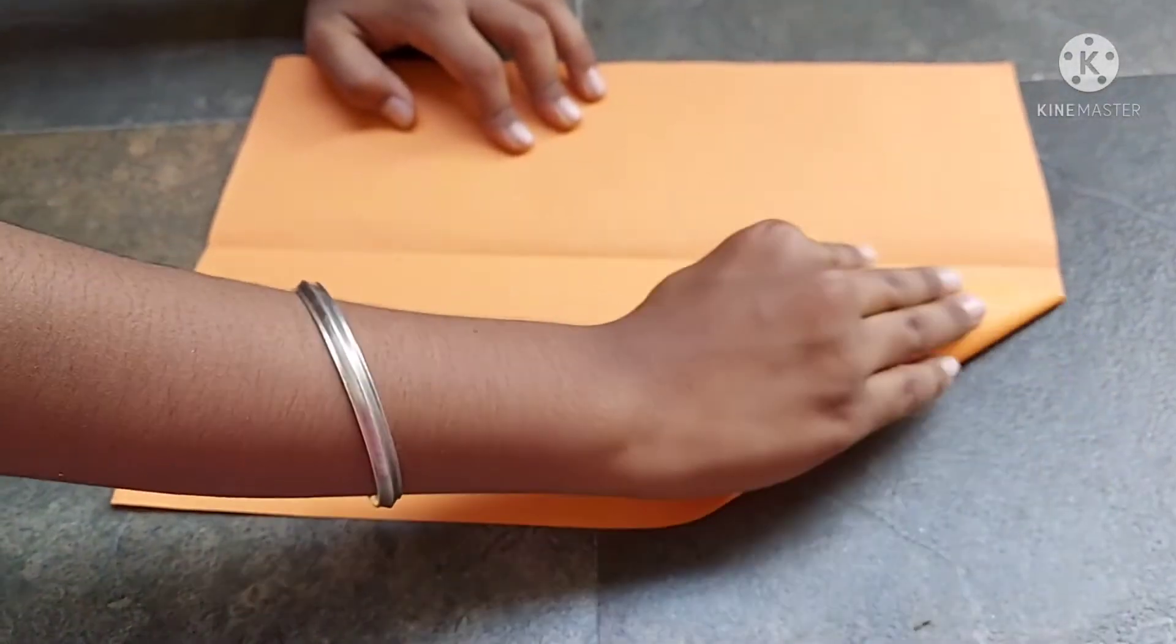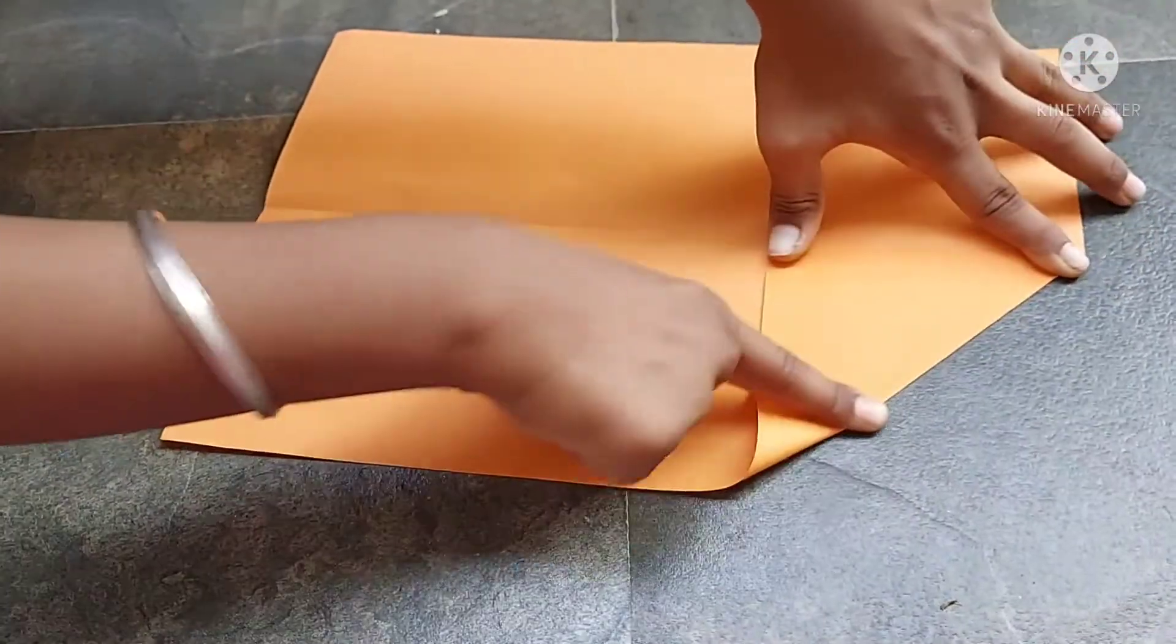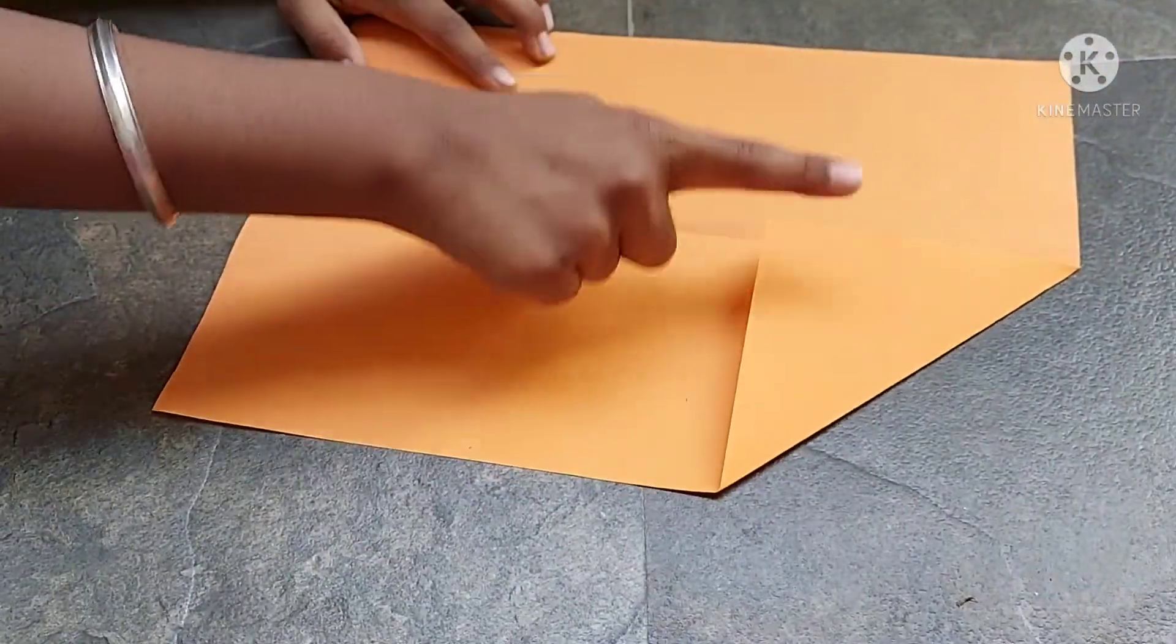First, we can make this one. We can make rockets. This is the triangle shape.